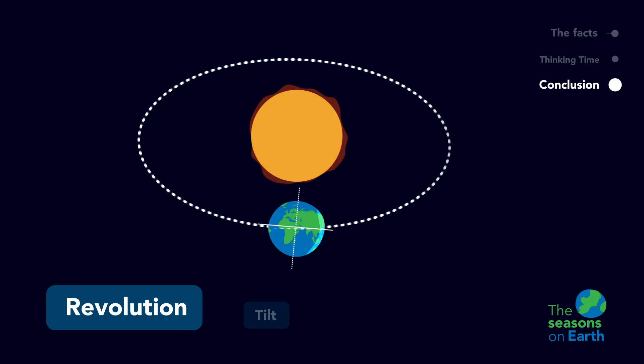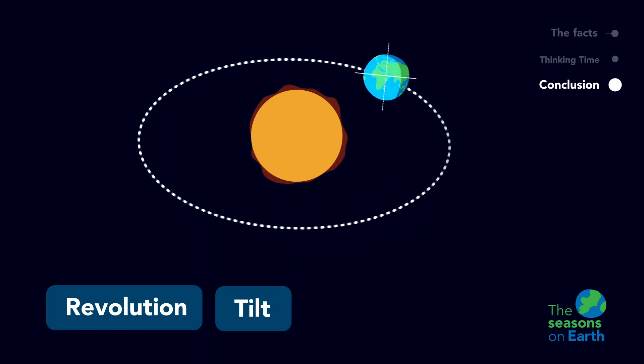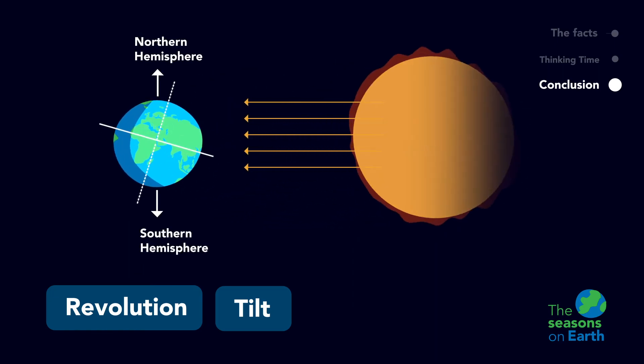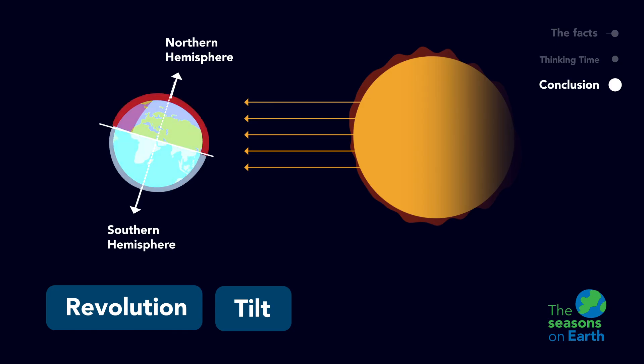In conclusion, the seasons are caused by the revolution and tilt of the earth. As the earth revolves around the sun, the angle of sunlight continuously changes throughout the year, depending on which hemisphere is leaning towards or away from the sun. This difference in angle leads to different temperatures on each hemisphere and the different seasons we experience on earth.